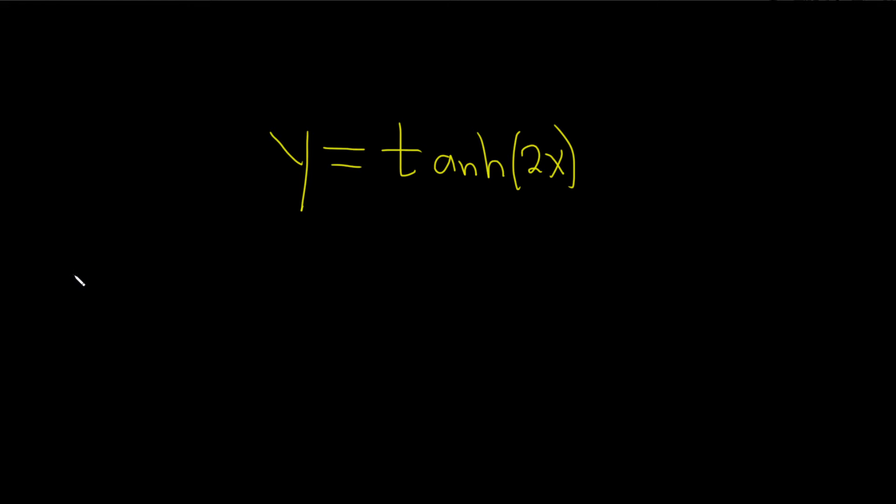So recall, when you take the derivative with respect to x of just the tanh of x, you get the hyperbolic secant squared of x. That's the formula we're going to use in this problem.